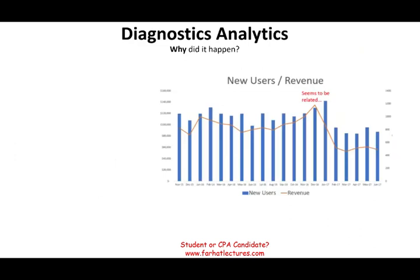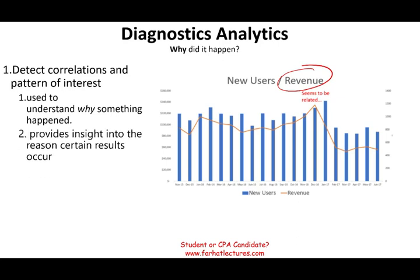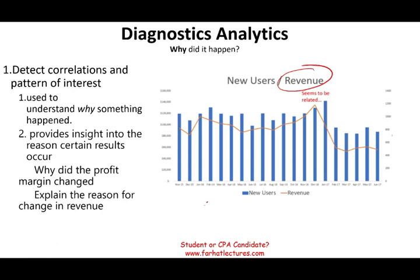Diagnostic analytics is about why did it happen. We try to detect a correlation or pattern of interest — why is our revenue changing? It's used to understand why something has happened or is happening. For example, why did the profit margin change? Was it because of cost — raw material, processing, or foreign currency exchange? This diagram shows that revenue is explained by new users: as users go up, revenue goes up; as users go down, revenue goes down. This is typical for a subscription-based business.